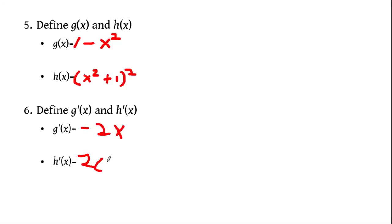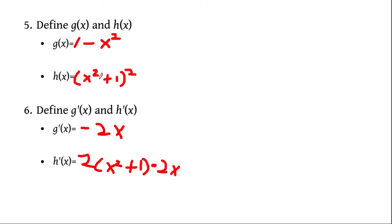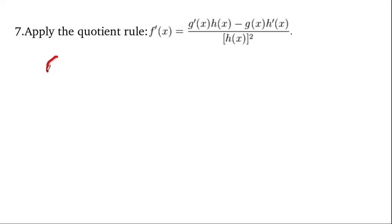For h'(x), we apply the chain rule: the derivative of (x²+1)² is 2 times (x²+1) times 2x — that is, differentiating the inside times 2x. We apply the quotient rule once again: g'(x) is −2x, and h(x) is (x²+1) whole squared.